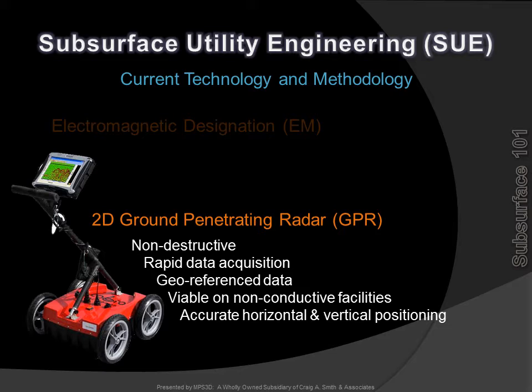2D ground-penetrating radar is a more advanced technology, is rapid, non-destructive, and works on conductive and non-conductive facilities such as PVC, HDPE, asbestos, cement, or clay.